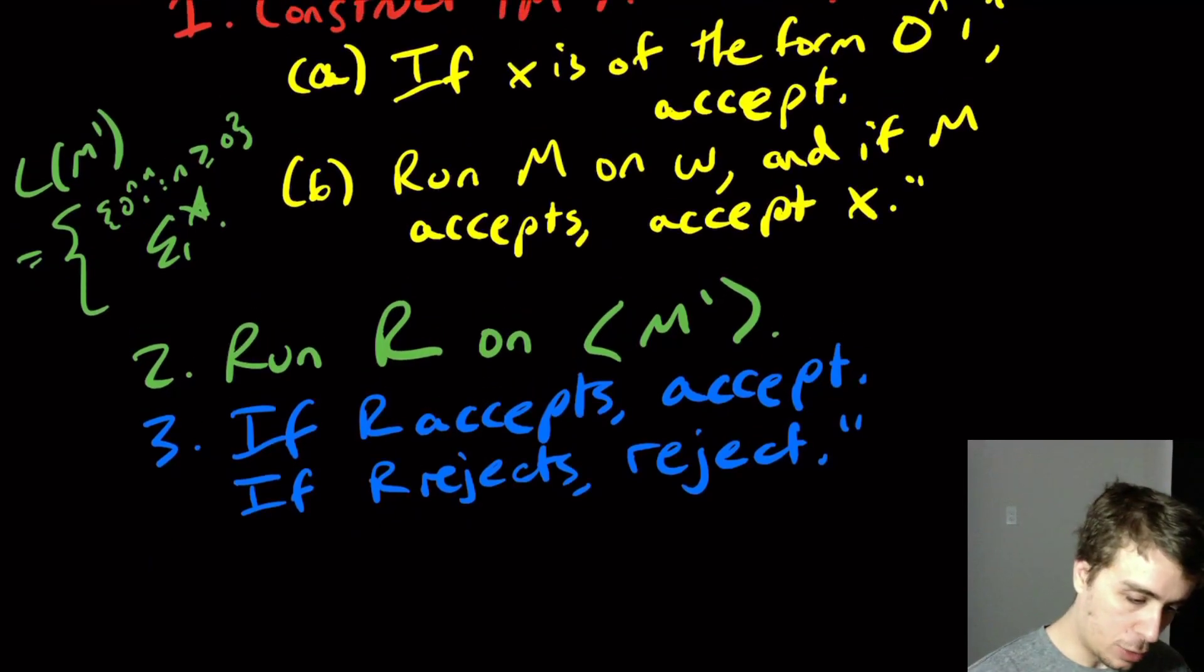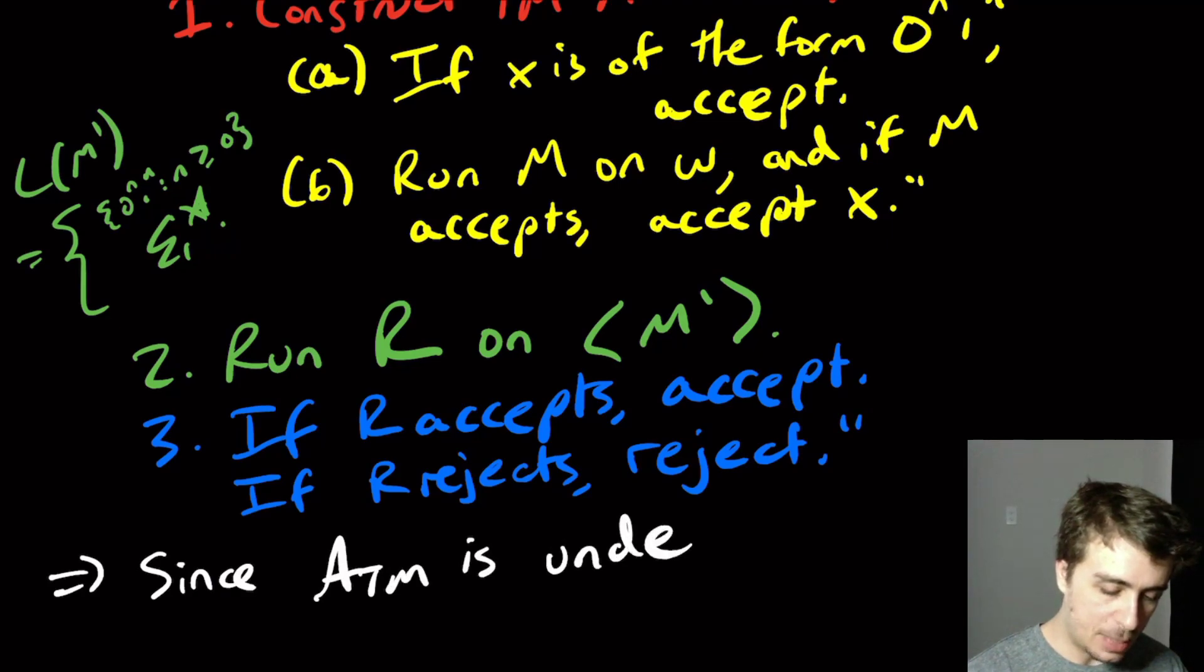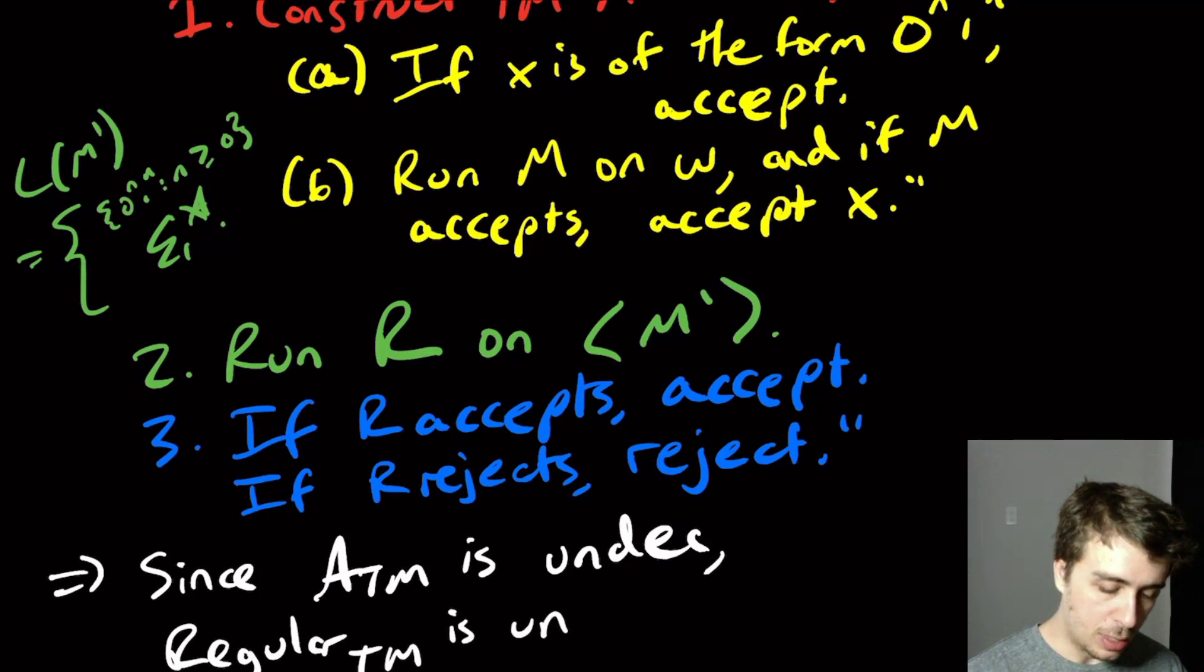As a final conclusion, since ATM is undecidable, we have that RegularTM is also undecidable.